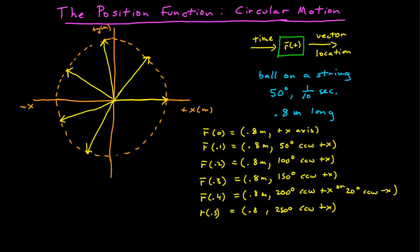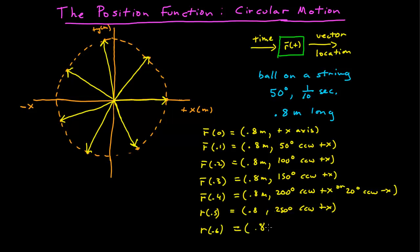Then 50 degrees later, it's at an angle of 300 degrees — it's covered 300 degrees so far, so it's over here. R at 0.6 seconds has a magnitude of 0.8 meters, and it's 300 degrees counterclockwise from positive x.